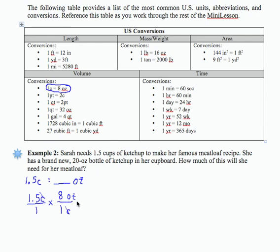That means my cups are going to cancel out. 1.5 times 8 is 12 ounces. Therefore, 1.5 cups is 12 ounces, and Sarah will use 12 of the 20 ounces in the bottle.